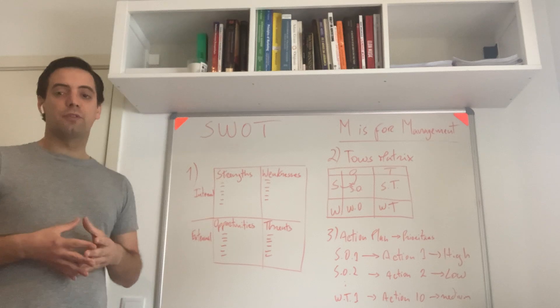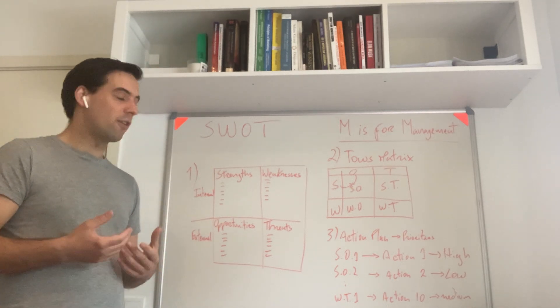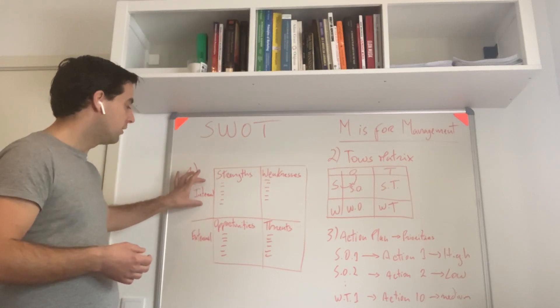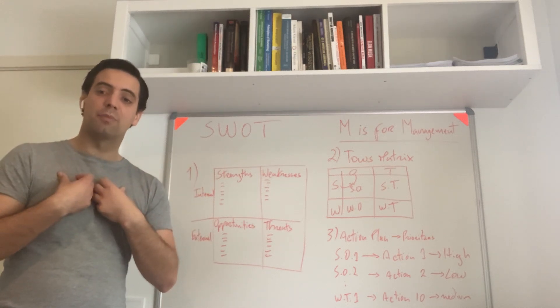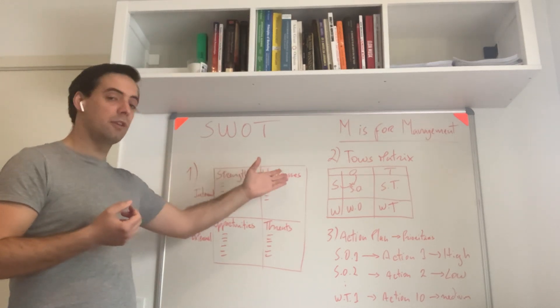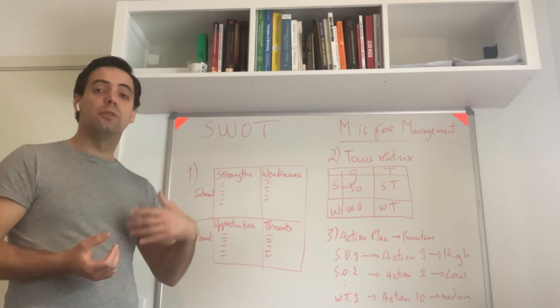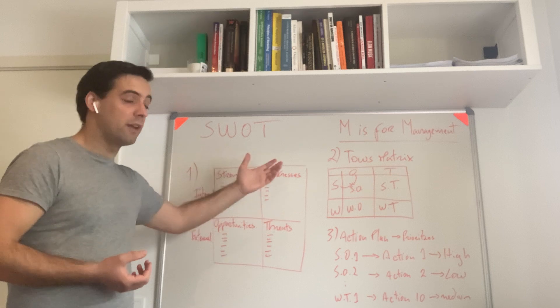First step is to list all these things. On the internal side, inside our company, we have our own strengths and weaknesses. Those are things that come from inside - either we are good at doing things or bad at doing others.